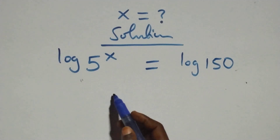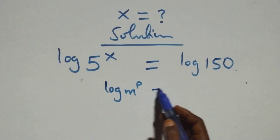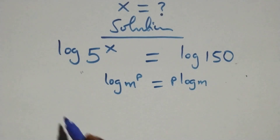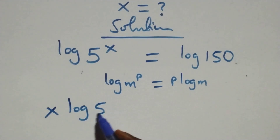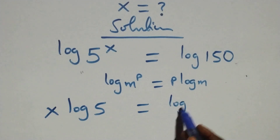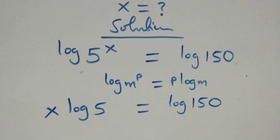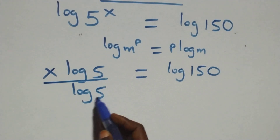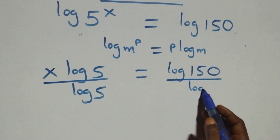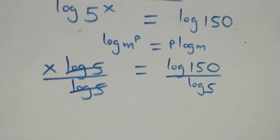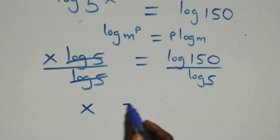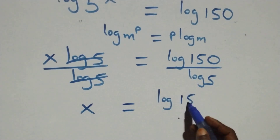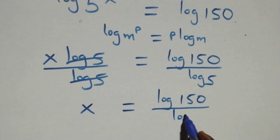We apply the power rule of logarithm: log m raised to power p is the same as p·log m. So here we have x·log 5 equals log 150. Then we divide both sides by log 5, and log 5 cancels, giving us x equals log 150 over log 5.